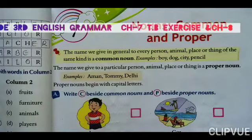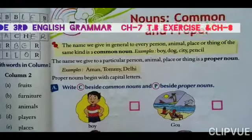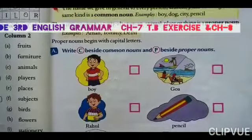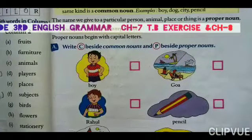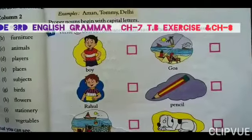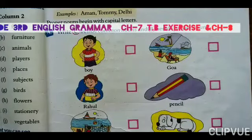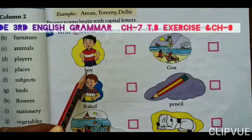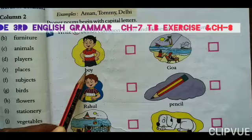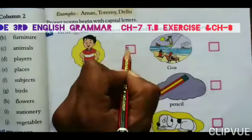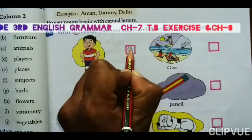So here you may find the exercise. Write C beside the common noun and P beside the proper noun. With this exercise you will understand what is a common noun and what is a proper noun. Here 'boy' — it is not any specific name, only 'boy' is written. So 'boy' will become a common noun.